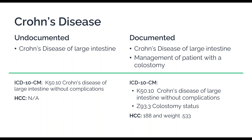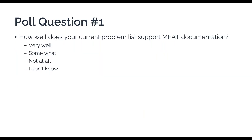Now it is time for our first poll question: How well does your current problem list support MEAT documentation? Options are: very well, somewhat, not at all, or I do not know.